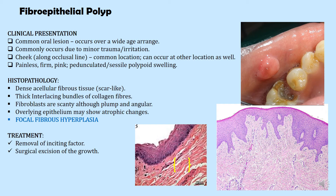Fibroepithelial polyp is a common oral lesion that occurs over a wide age range. These hyperplastic growths commonly occur along the occlusal line due to trauma or irritation. They are commonly seen on the buccal mucosa as painless, firm, pink pedunculated or sessile swellings. In this clinical case, the etiological factor could be the sharp edge of a decayed tooth leading to chronic cheek biting, resulting in this hyperplastic lesion.